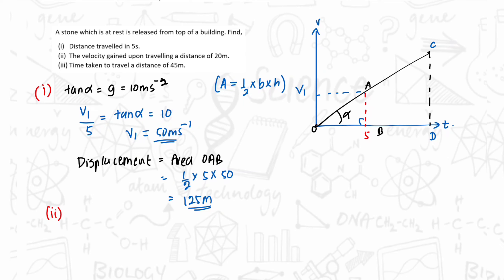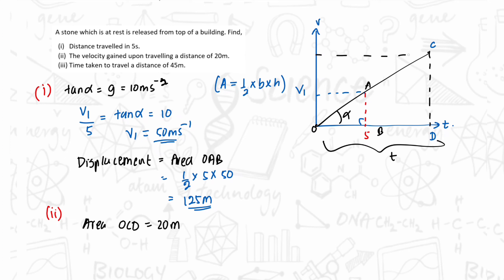Now let's move to the second question: we have to find the velocity when the distance travelled is 20 meters. Let's say area OCD = 20 meters, where OD is the time taken = T, and the velocity is V2. Using the tan ratio: V2/T = 10, so V2 = 10T — that is the first equation.